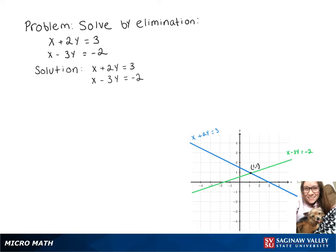We're going to solve this system of equations by elimination. We can subtract the second equation from the first equation, which will cancel out our x's and leave us with 5y equals 5. Then dividing both sides by 5 gives y equals 1.